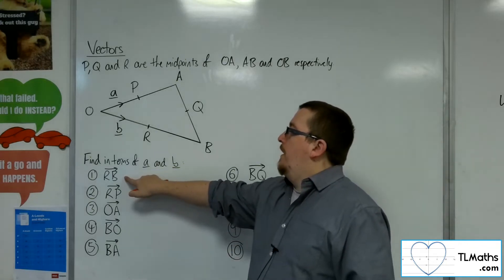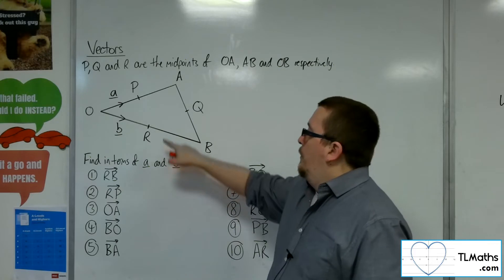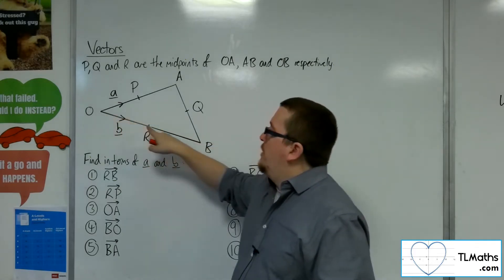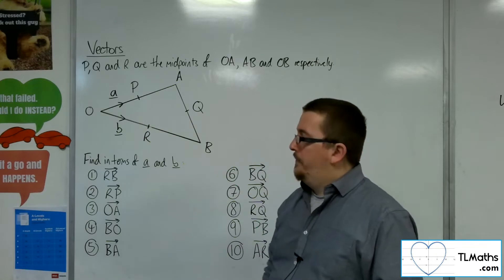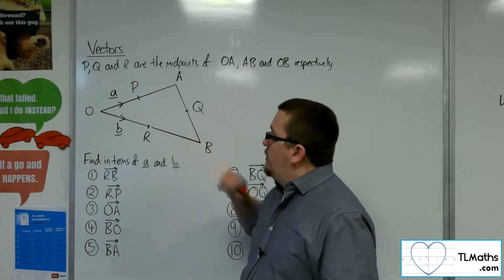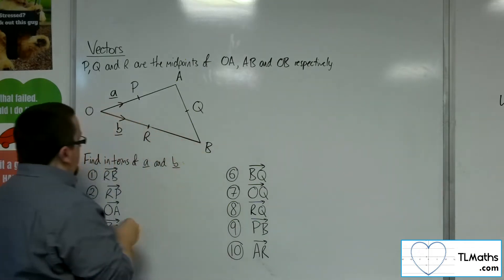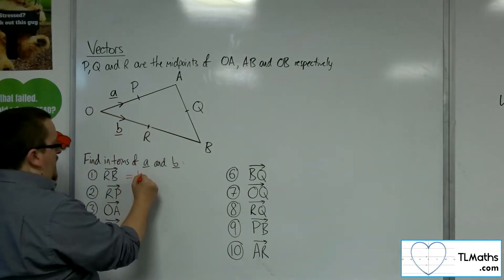So let's start off with R to B. Now that means we need to get from there to there. We know to get from O to R is just B. And if R is the midpoint, then to get from O to R must be the same as getting from R to B. So this must just be B.